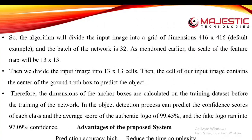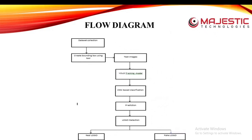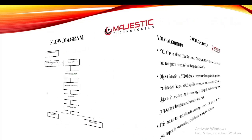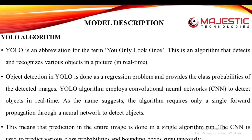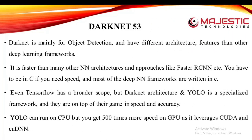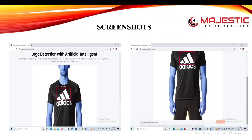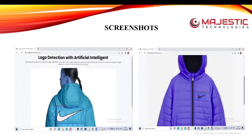The process includes dataset collection, creating a bounding box around the logo, YOLO training, model production, and finally logo detection. The logo detection is based on the threshold of the image. If the threshold value is greater than the specified value, it is identified as a real logo; otherwise, it is identified as a fake logo.